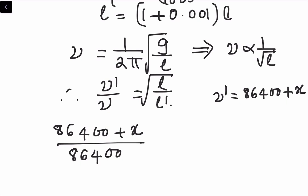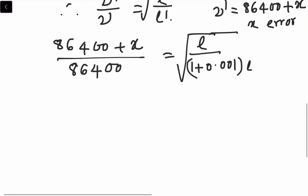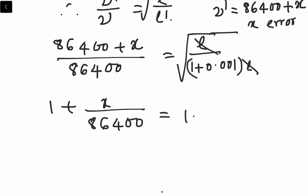So now that is equal to under root L divided by L dash, which is 1 plus 0.001 into L. From there, therefore let us continue. That is equal to 1 plus x divided by 86,400 equals - L and L gets cancelled - 1 plus 0.001 to the power of...